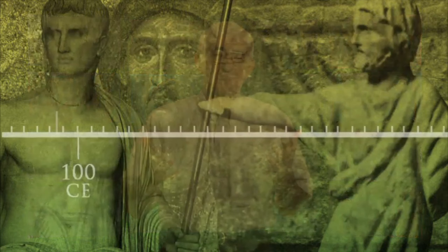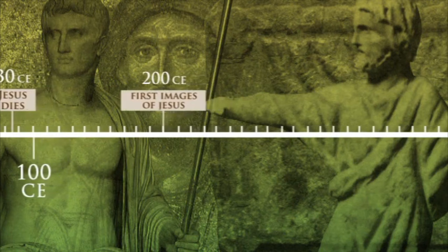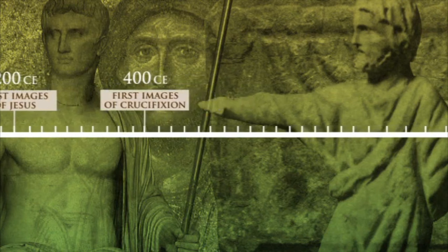When you look at earliest Christian art, you notice that there are no representations of Jesus before about the year 200, apart from symbols. There are no representations of Jesus crucified before about the year 400, and you're not going to get Jesus rising from the dead before about 700.